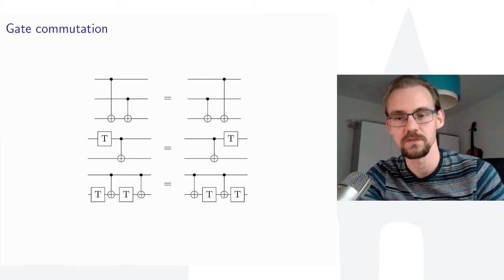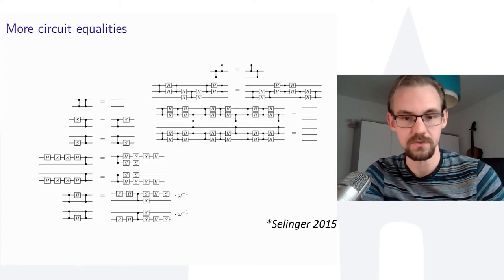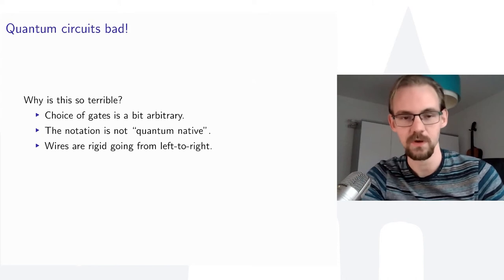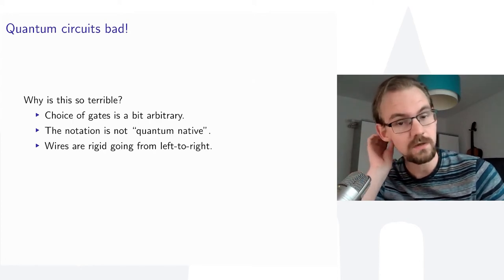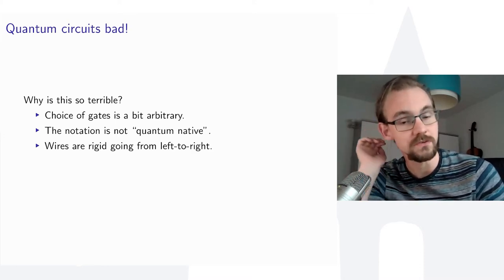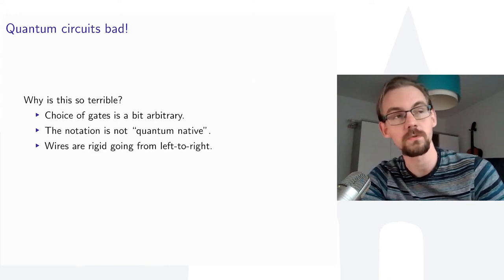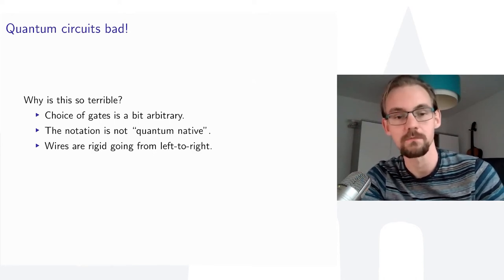There are also non-trivial commutation relations, so there's not a unique way to describe quantum computations. Unfortunately, there are loads more identities beyond the simple ones. This becomes a bit of a mess. The choice of gates is somewhat arbitrary; including many gates requires rules governing how each interacts. The notation is also not quantum-native — circuits come from classical logic circuits. Furthermore, the wires are very rigid: same number of inputs and outputs, and ancillas or measurements have strict rules.